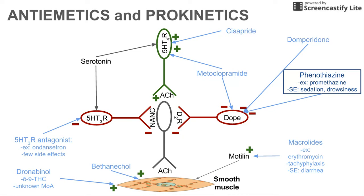Next are the phenothiazines. These have side effects like sedation and drowsiness. Similar to domperidone, they deactivate that dopamine receptor — so it's like a double negative: deactivating the inhibitory neuron, which in turn promotes gastric motility.